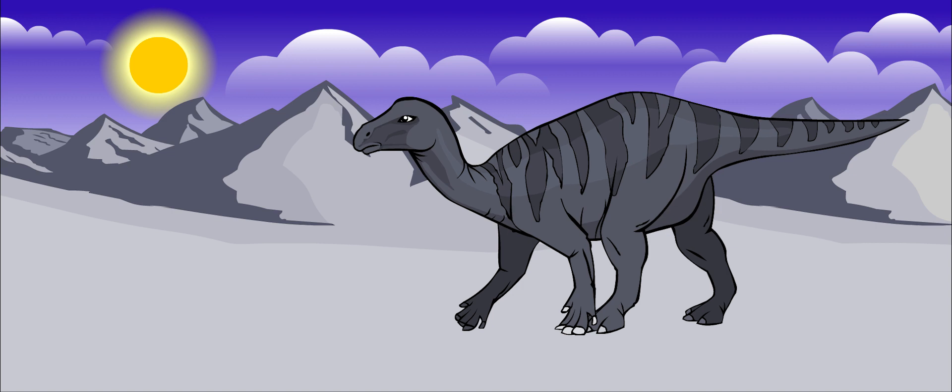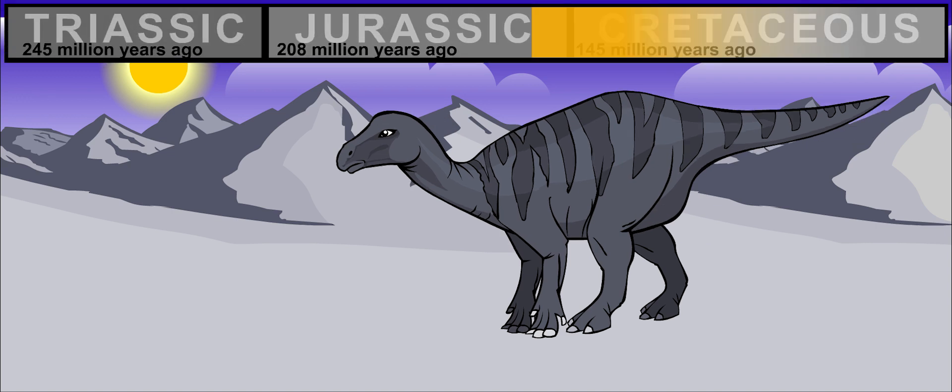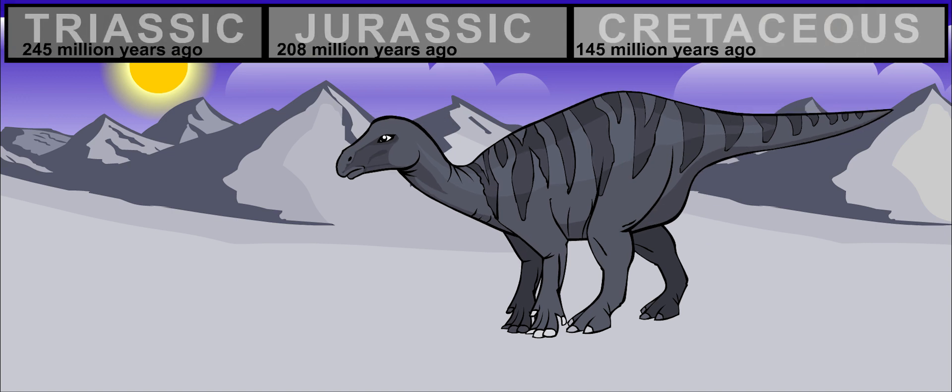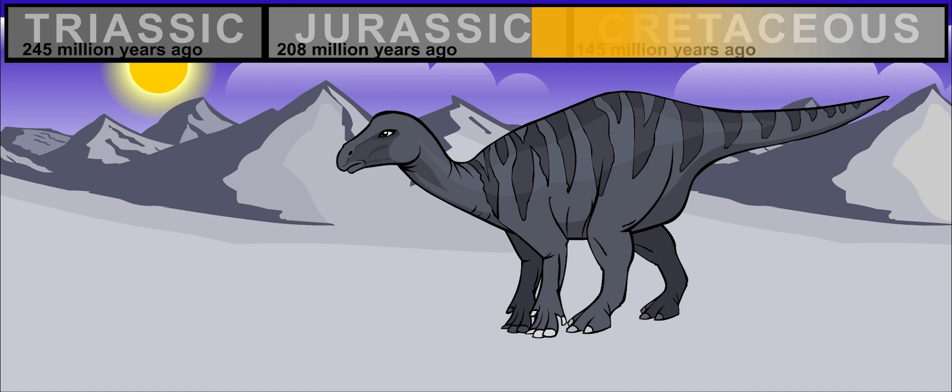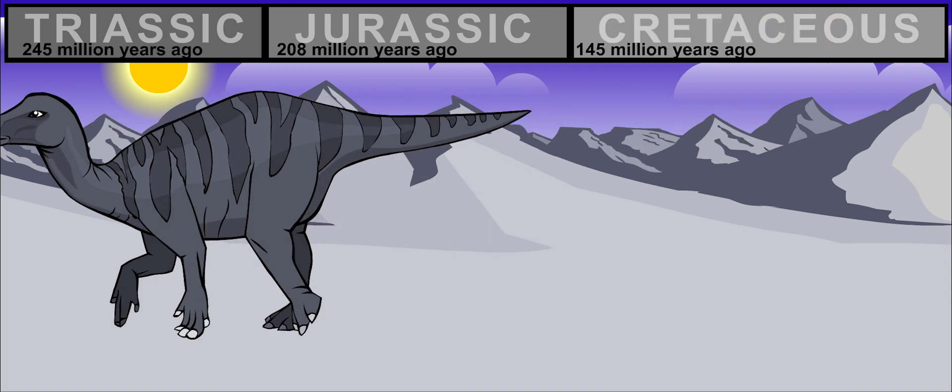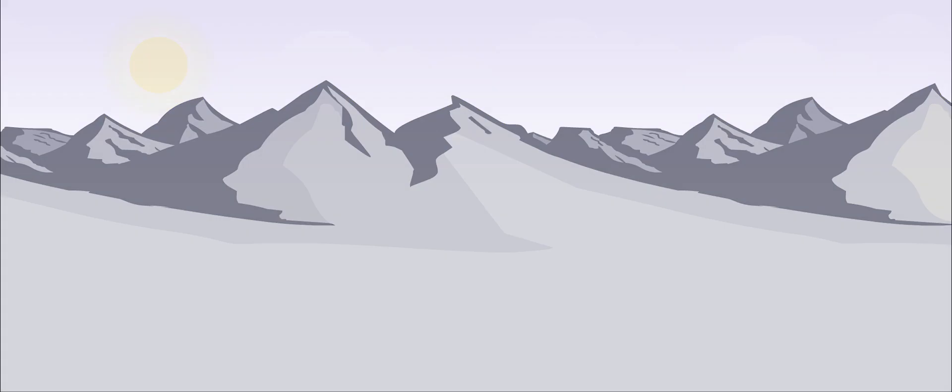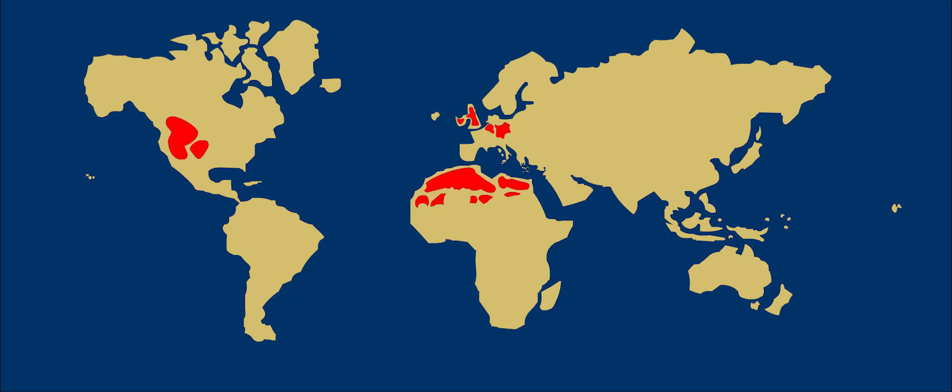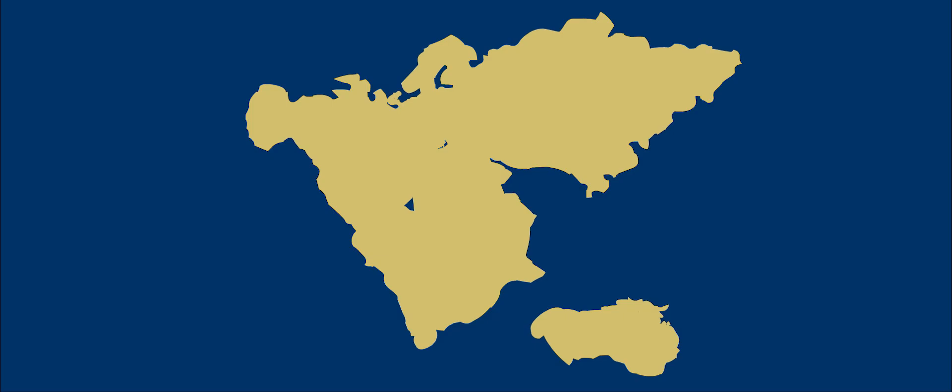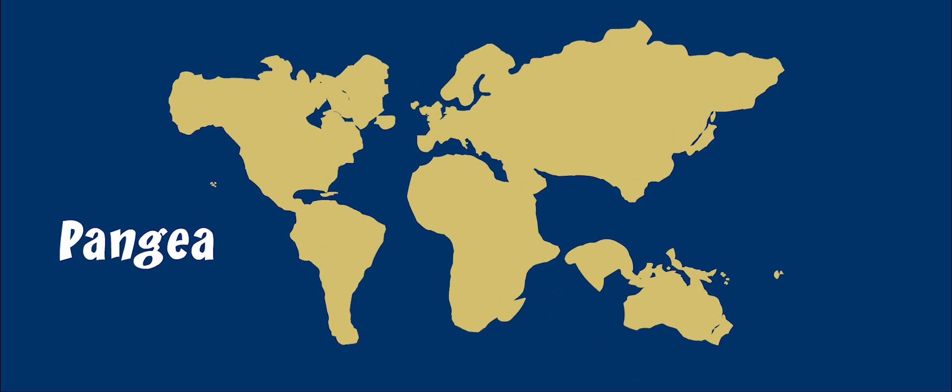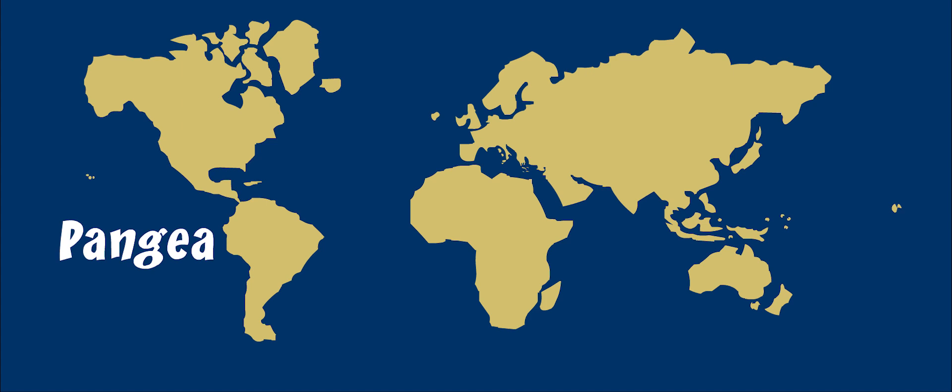Iguanodon lived about 135 to 125 million years ago. The Iguanodon was a very successful dinosaur. This species survived for a long time. Iguanodon bones have been found in many places. Even though Pangea, the large landmass, was breaking apart, Iguanodon spread and lived in every continent except Antarctica.